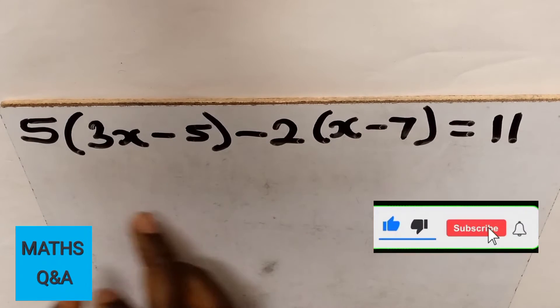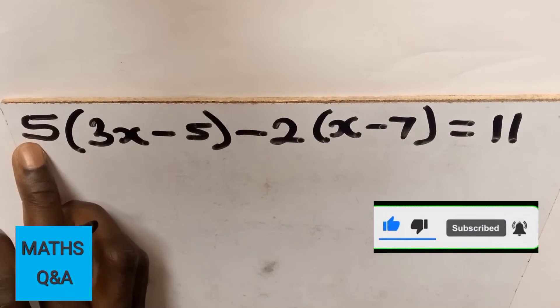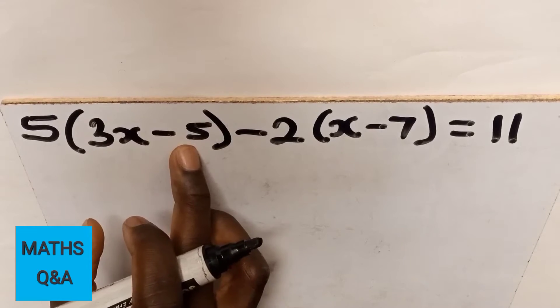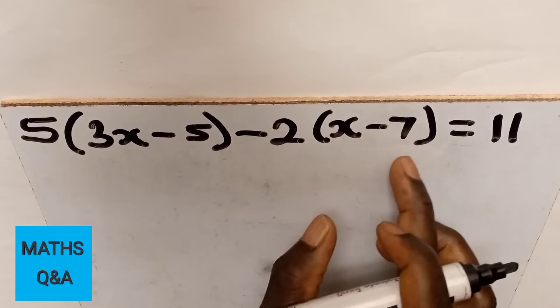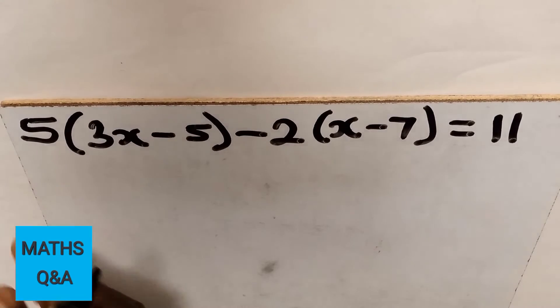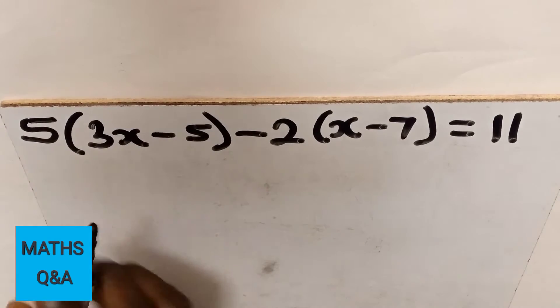expand the brackets by multiplying the number outside a bracket by each term in the brackets. So let's expand it. 5 multiply 3x gives